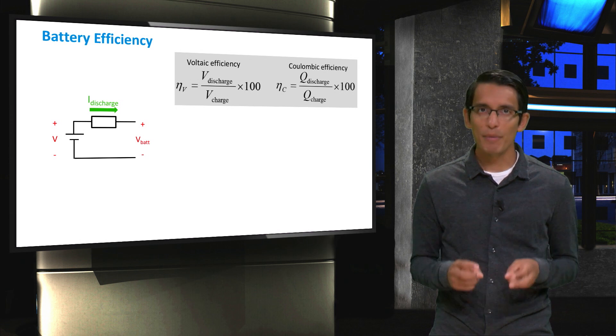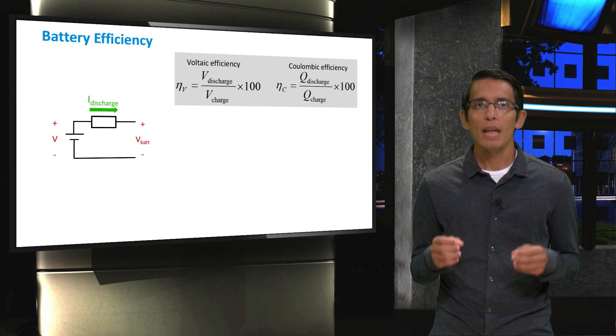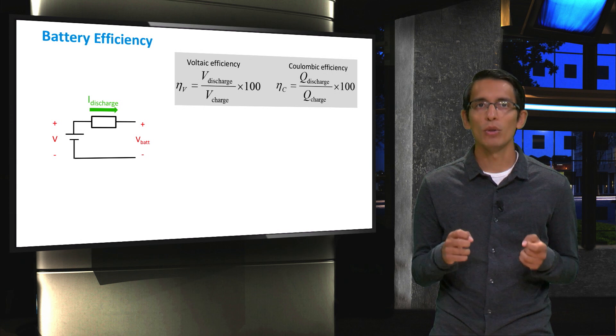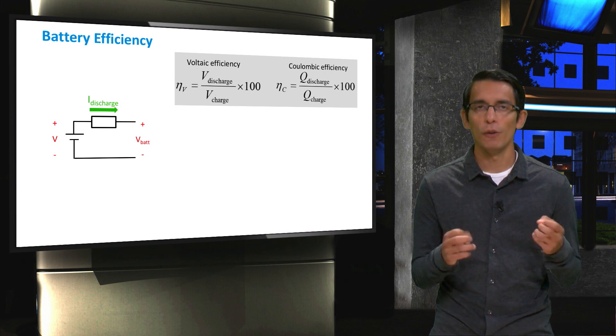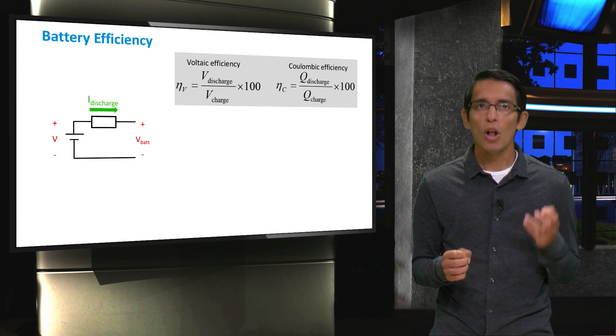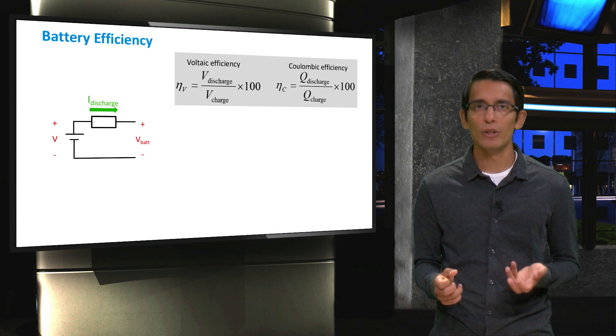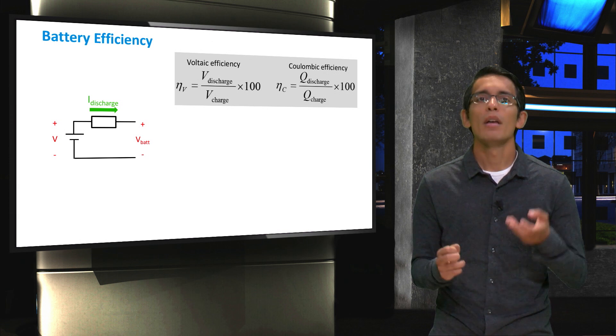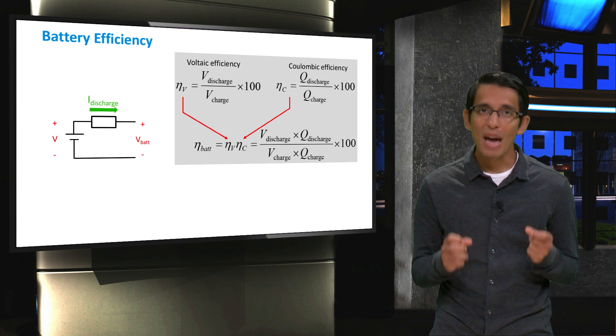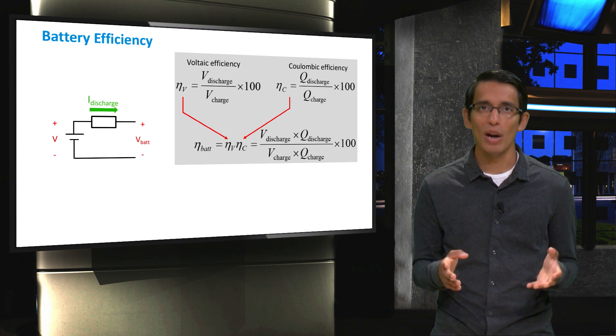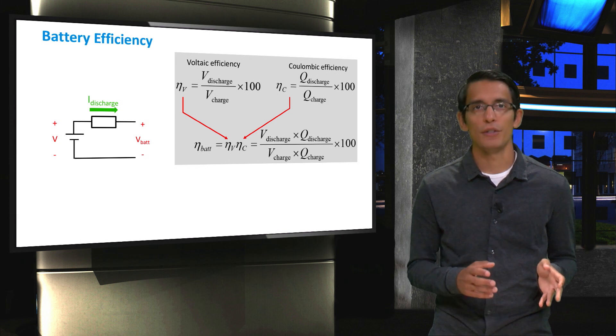The next type of efficiency is the Coulombic Efficiency or Faraday Efficiency. It is defined as the ratio of total charge extracted from the battery to total charge put into the battery over a full charge cycle. There are always some losses that occur due to power dissipation of the electrodes and imperfect chemical energy conversion. Finally, by combining these two efficiencies, we can obtain the battery efficiency, which we saw a while ago. It is defined as the product of Voltaic Efficiency and Coulombic Efficiency.